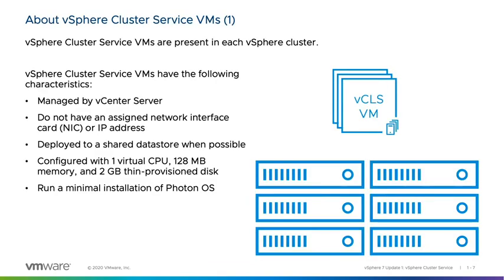A vSphere Cluster Service VM is deployed from an OVA with a minimal installed profile of Photon OS. vSphere Cluster Services manages the resources, power state, and availability of these VMs. vCLS VMs are required for maintaining the health and availability of vSphere Cluster Services. Any impact on the power state or resources of these VMs might degrade the health of vSphere Cluster Services and cause vSphere DRS to stop working in the cluster.